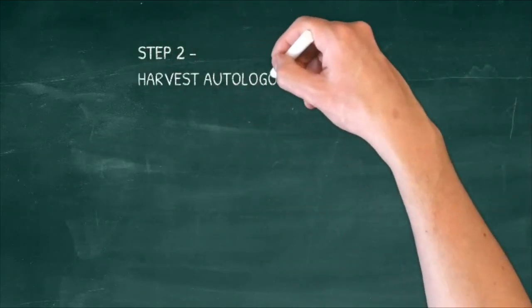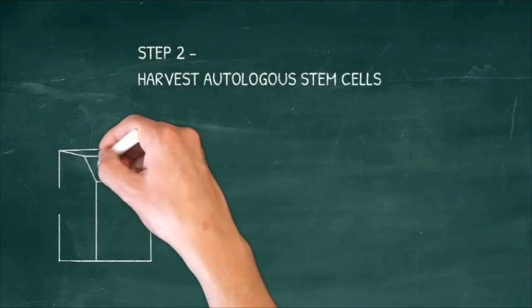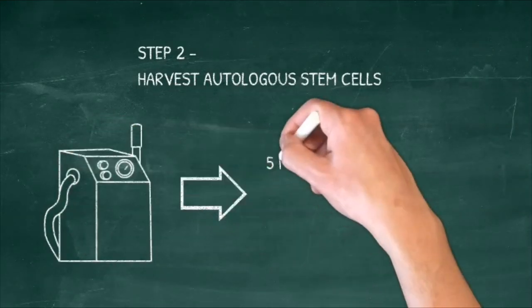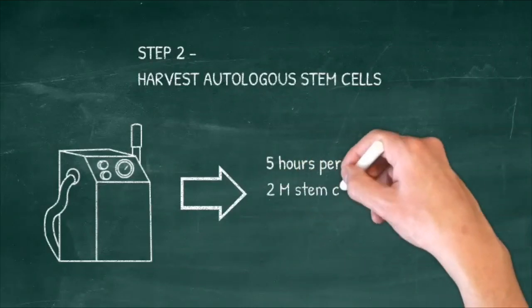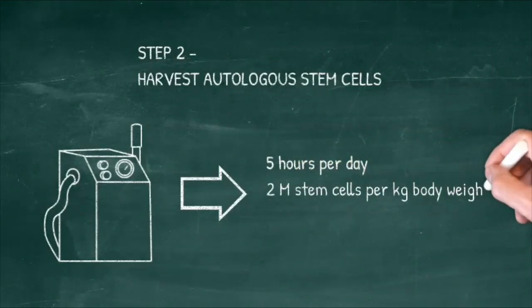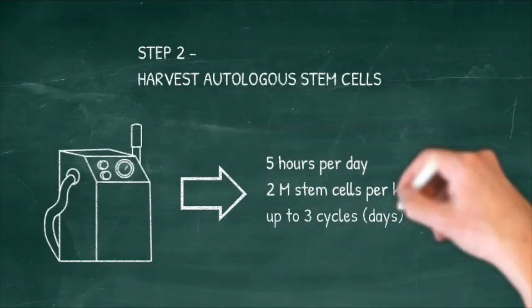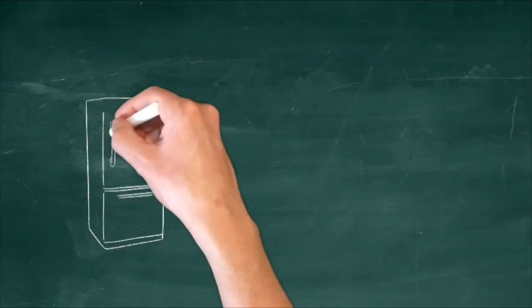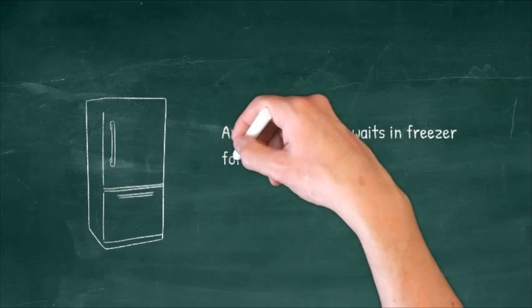Then the next step: the harvest of autologous stem cells. There will be the patient's army. 5 hours per day the patient's blood circulation is connected to a machine. The aim is to get about 2 million stem cells per kilogram body weight, which can take up to 3 cycles, meaning 3 days. They go into a freezer where the army waits for its big day.